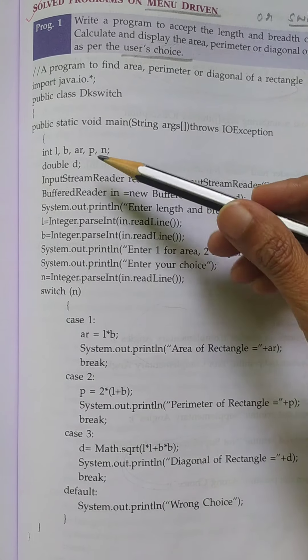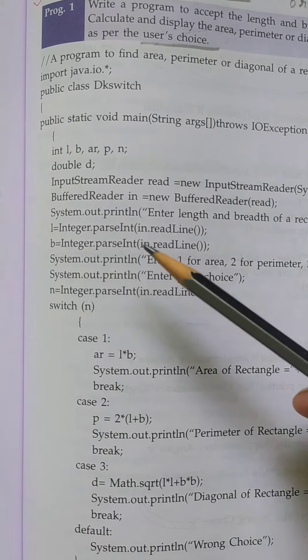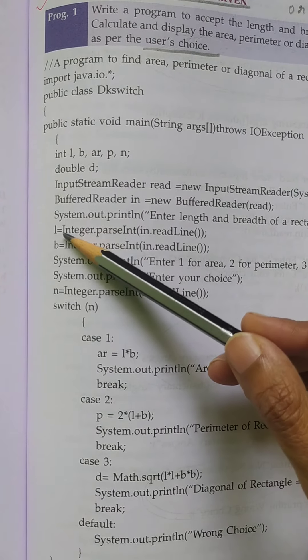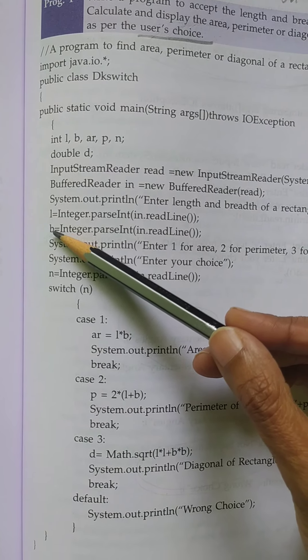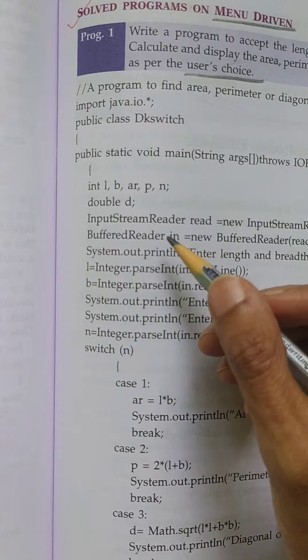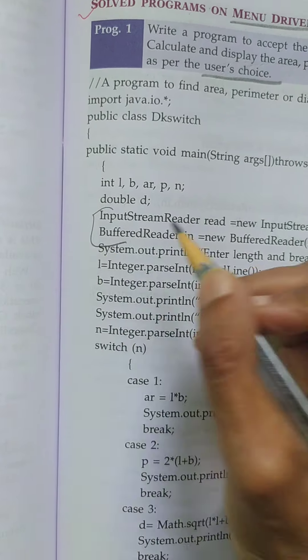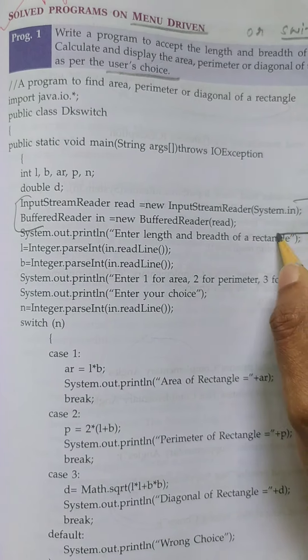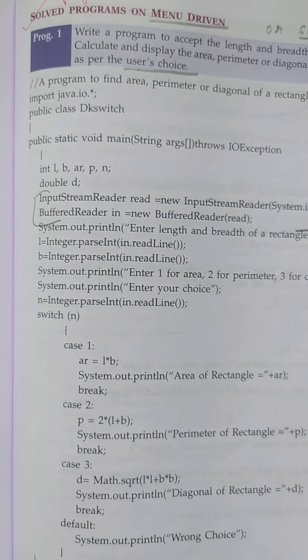We are first entering the length and breadth of a rectangle and storing it in which variable: length is stored in L variable and breadth is stored in B variable. Instead of this InputStreamReader, you can use Scanner class statement because InputStreamReader is reduced topic in your syllabus now.